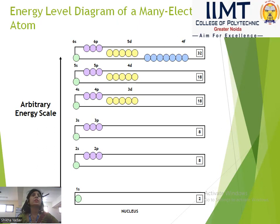Next: 6s has 2 electrons, 6p has 6 electrons, 5d has 10 electrons, and 4f has 14 electrons. The total number of electrons in this level is 32.